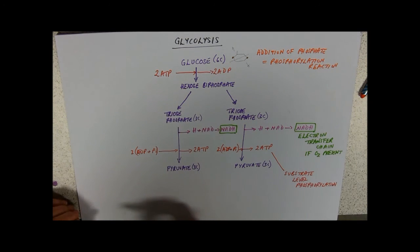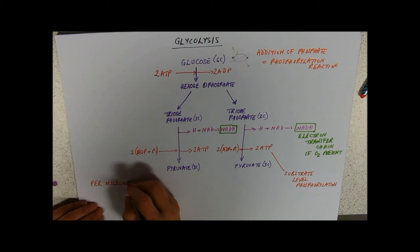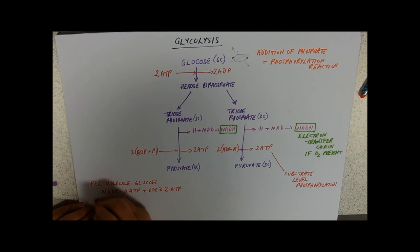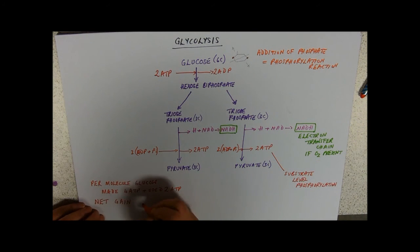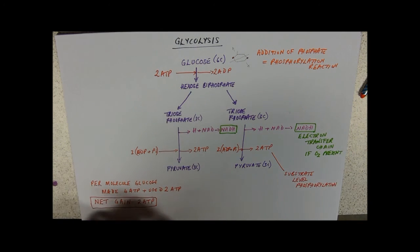So overall, from one molecule of glucose, per molecule of glucose, we have made four ATP and used two. So overall, or net, so whenever we're talking about the gain of ATP from glycolysis, we're looking at that overall gain. It's really important, net gain of two ATP.